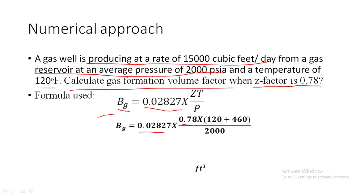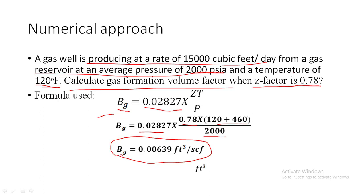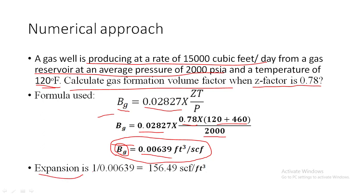The temperature is given in Fahrenheit, so I convert to Rankine by adding 460, giving 580°R. The average reservoir pressure is 2000 psi. Substituting these values: BG = 0.02827 × (0.78 × 580) / 2000, which gives BG = 0.00639 ft³/SCF as the formation volume factor. The gas expansion factor is the reciprocal of BG: 1 / 0.00639 = 156.49 SCF/ft³.